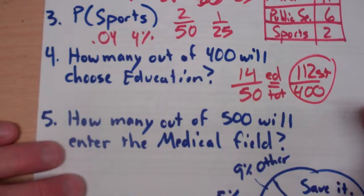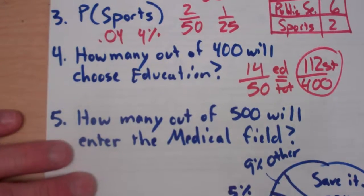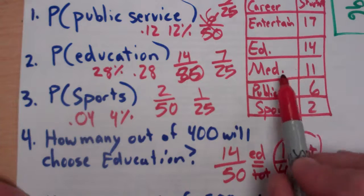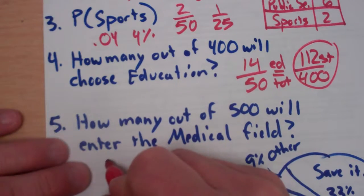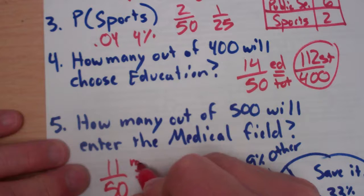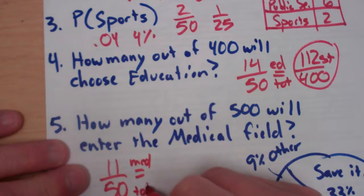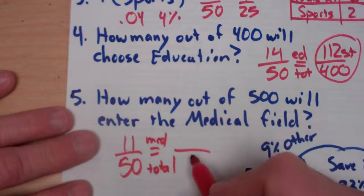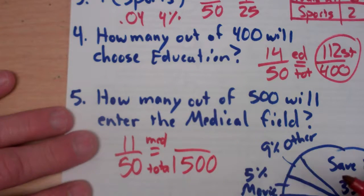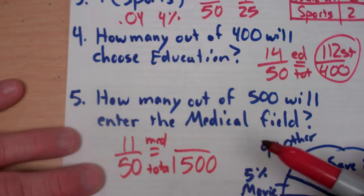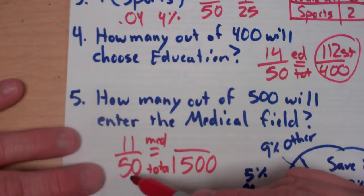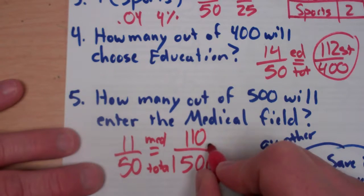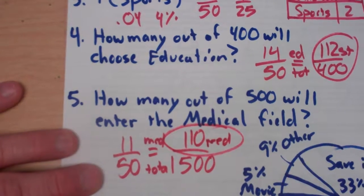So, let's try that again. Number 5 says, how many out of 500 will enter the medical field? So when I go back to the medical field, there's 11 out of 50 that went to the medical field. 11 out of 50 total. And I'm saying I want to grow this out to 500 total students. So, grow it out to the entire population. Multiply, divide, or you can realize they just took it times 10. So, that would be 110 that chose the medical field.